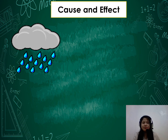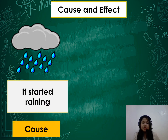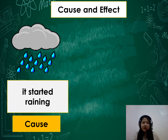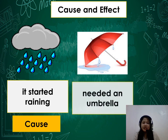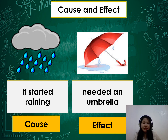Let's have more examples. First picture: it started raining — this is the cause. What do you think will be the effect of raining? The possible effect is you need an umbrella, or there will be a flood, or if you don't have an umbrella you will get wet. Did you understand? Great!